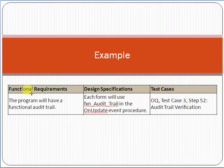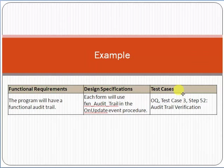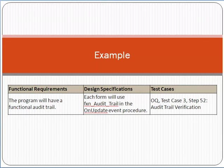So the functional requirement is mapped with the design specification, and then mapped with the test cases. There was a requirement from the customer that the program should have an audit trail. You map it with the design specification, then map it with the test cases, and you must make sure that the test case is executed, validated, and tested thoroughly — so that this requirement is not lost anywhere. The main objective of the RTM is that whatever requirement the customer has raised should be documented and mapped with test cases.